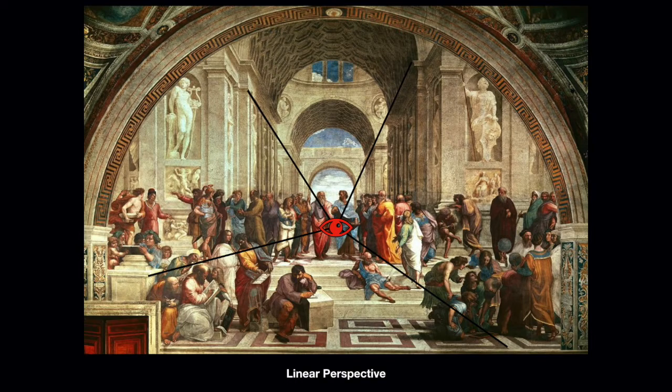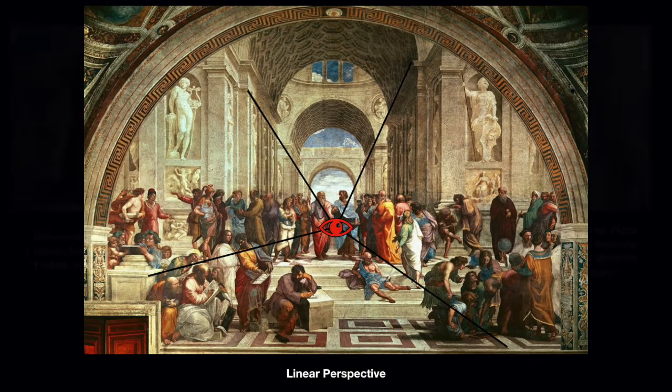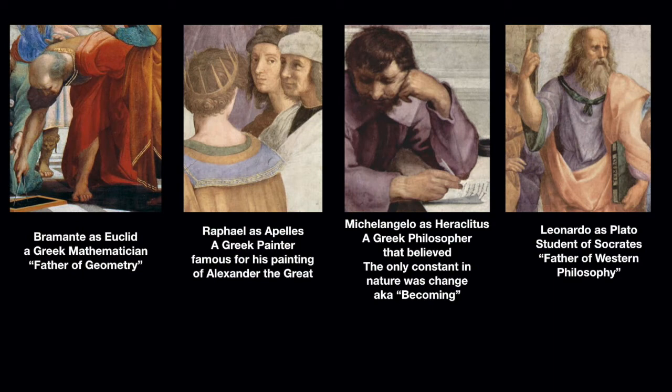This painting is also a kind of who's who of the Renaissance. The painting is called the School of Athens. The first big name in it is Bramante, shown as Euclid, the father of geometry. Bramante was also the first architect of Saint Peter's Cathedral, which we'll talk about next time because it's a really important Baroque work of architecture.